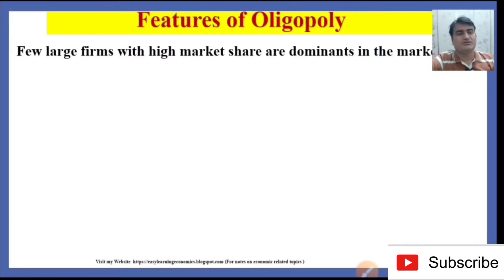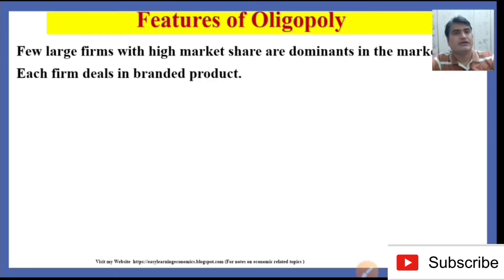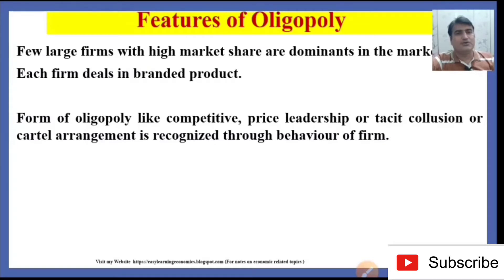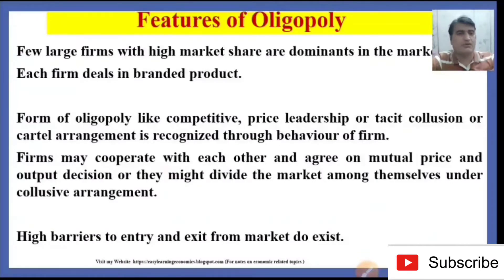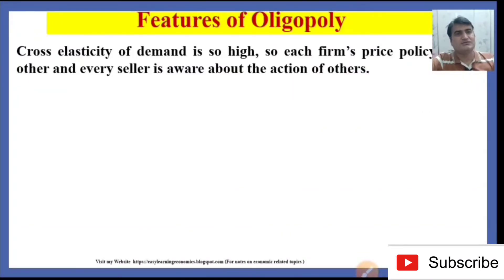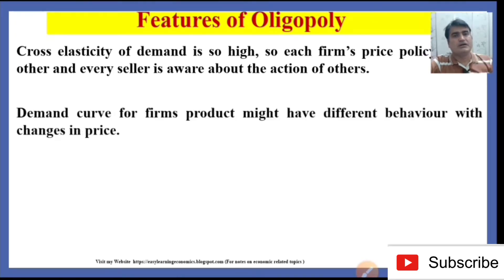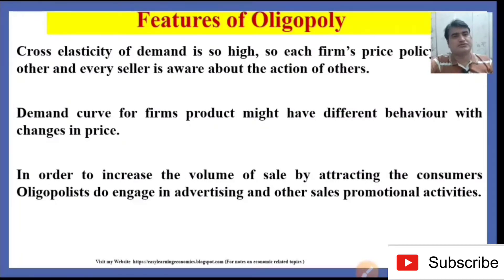The characteristics or features of Oligopoly are: few large firms with high market share or dominance in the market; each firm deals in branded products; forms of Oligopoly like competitive price leadership, tacit collusion, or cartel arrangement are recognized through the behavior of firms. Firms may cooperate and agree on mutual price and output decisions or divide the market under collusive arrangements. High barriers to entry and exit exist. Cross-elasticity of demand is high, so each firm's price policy affects others, and every seller is aware of the actions of others. Demand curve behavior may differ with price changes. Oligopolies engage in advertising and other sales promotional activities to attract consumers.